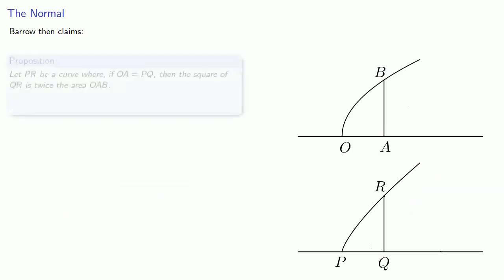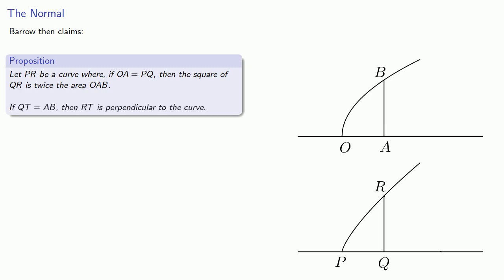Barrow then goes on to claim the following. Let PR be a curve where if OA equals PQ, then the square of QR is twice the area of OAB. If we take QT equal to AB, then RT is perpendicular to the curve.